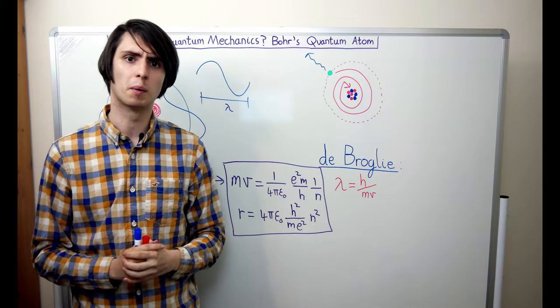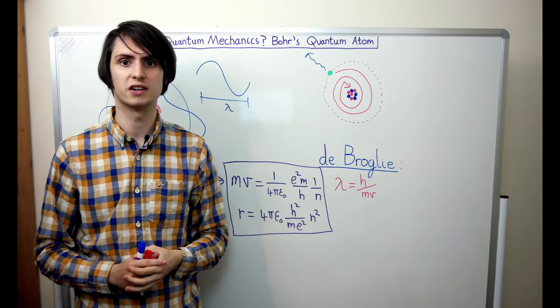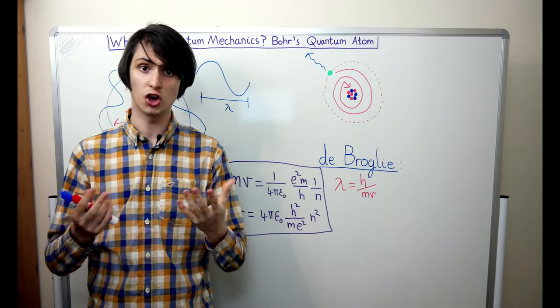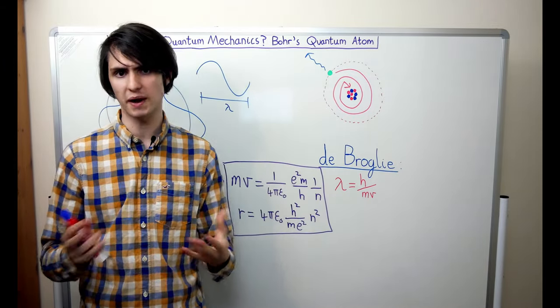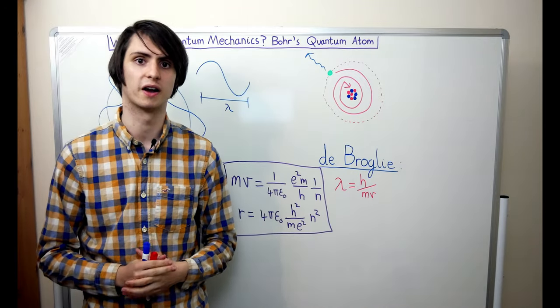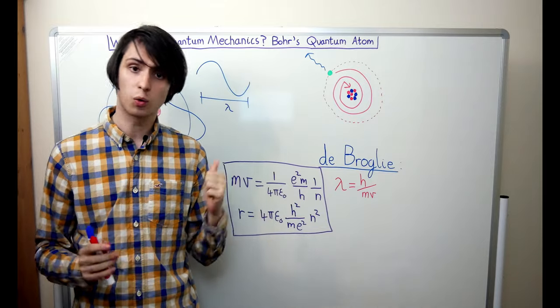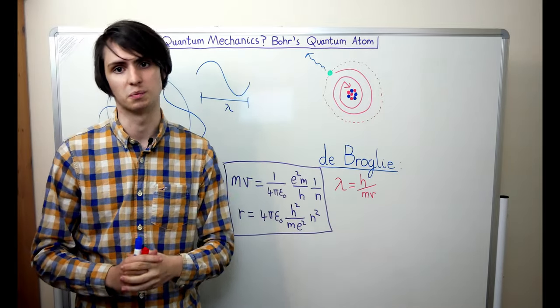Firstly, it solved a problem that classical mechanics couldn't. Second, it introduced the idea of quantization into the model of the atom. And thirdly, this model produced pretty good predictions for what the spectrum of a hydrogen atom should look like. No other theory had come close to achieving this, and so the quantum ideas Bohr used gained massive experimental support.